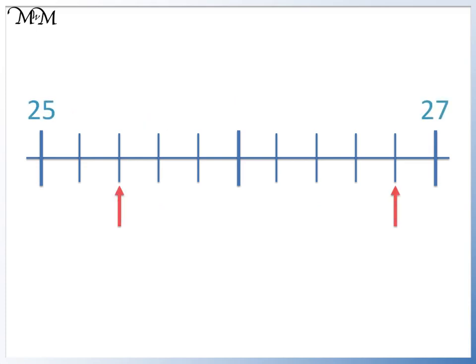In this example, the scale ranges from 25 to 27. This thicker line in the centre is the halfway point. The number that is halfway between 25 and 27 is 26. To get from 25 to 26, there are five steps. To get from 26 to 27, there are also five steps. So we are counting up in 0.2s.